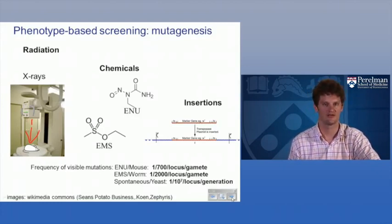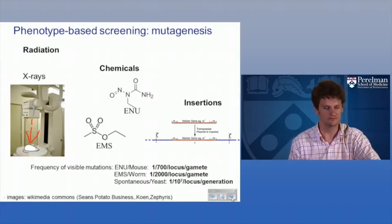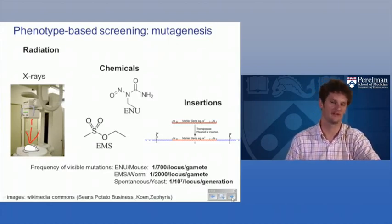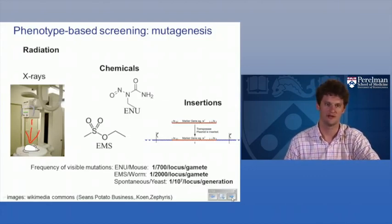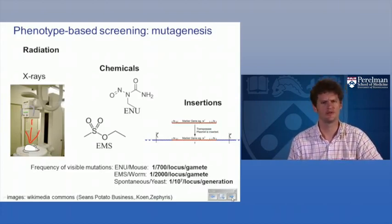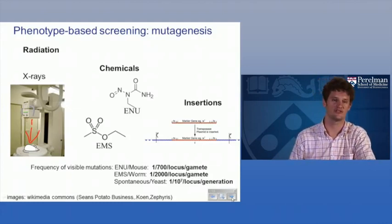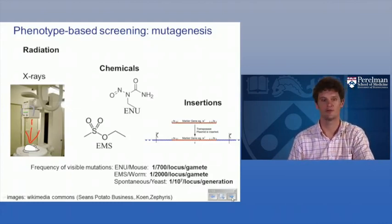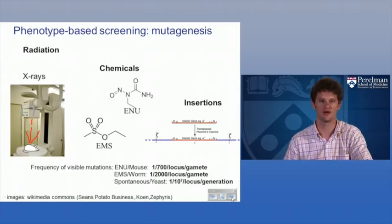X-rays and gamma-rays have the advantage of making fairly large, strong-effect alleles by creating double-stranded breaks, leading to big deletions. You can actually delete several genes in a row, which is useful when dealing with a process where you have a lot of duplicated genes. In most species there's enrichment for genes with similar homology being located adjacent in the genome, so this method gives you a chance of making deletions that take out both copies of a gene.